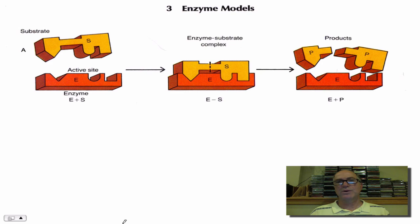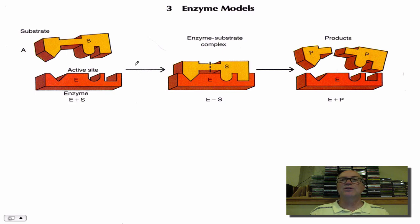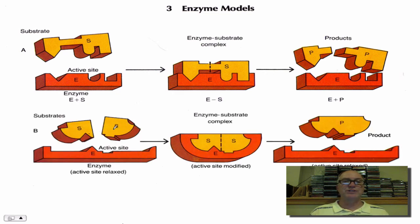Which model would this be — lock and key or induced fit? It's lock and key. The substrate fits perfectly into the active site of the enzyme, forming an enzyme-substrate complex. Then the bond is broken and the enzyme is unchanged, releasing two products. That's a decomposition reaction. Now this next one is the induced fit: two substrates bind to the active site, and the binding causes the active site to clamp down on the substrates. That stresses some chemical bonds, causing them to be bonded together, and we make a single product. The enzyme is returned to its original relaxed shape — a synthesis reaction where two substrates are turned into one product.